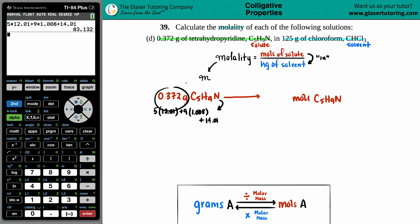So we're going to take the 0.372 and divide it by 83.132. So 0.372 divided by that number. And I get roughly a very small number. So I guess we'll say 0.004475, something like that.